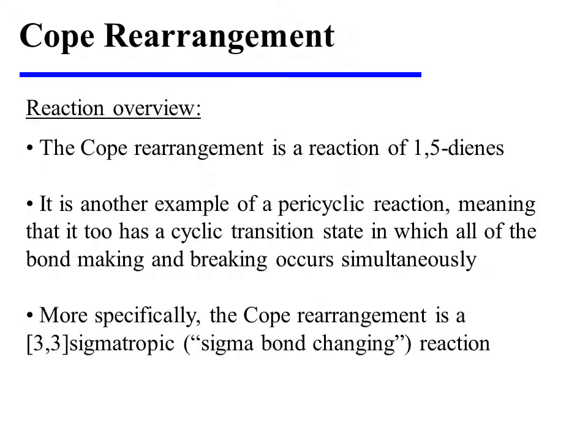The COPE rearrangement is a reaction of 1,5-dienes. It is another example of a pericyclic reaction, like the Diels-Alder reaction, meaning that it, too, has a cyclic transition state in which all of the bond-making and breaking occurs simultaneously. More specifically, the COPE rearrangement is a 3,3-sigmatropic reaction, and this means a sigma-bond-changing reaction.